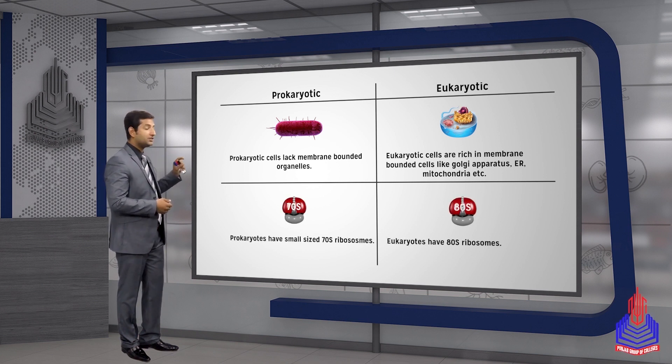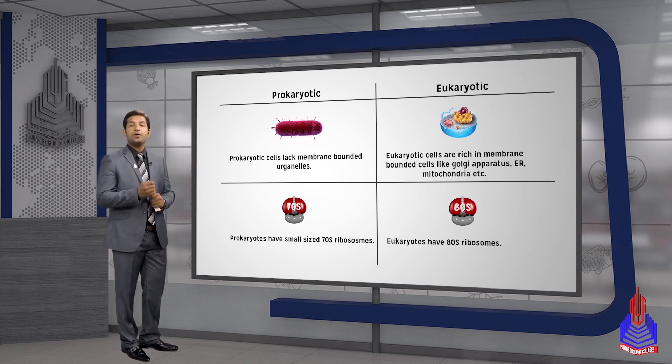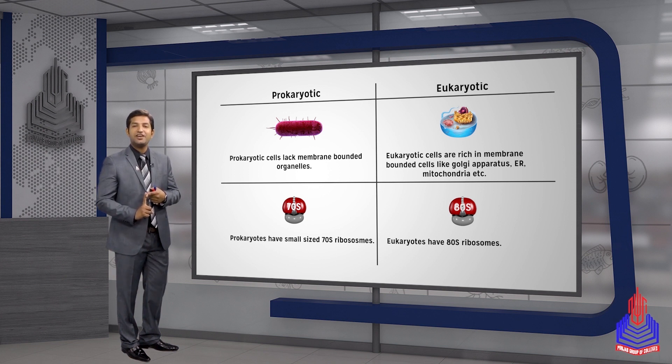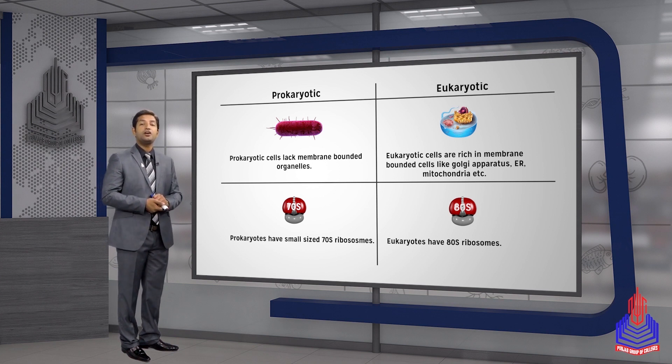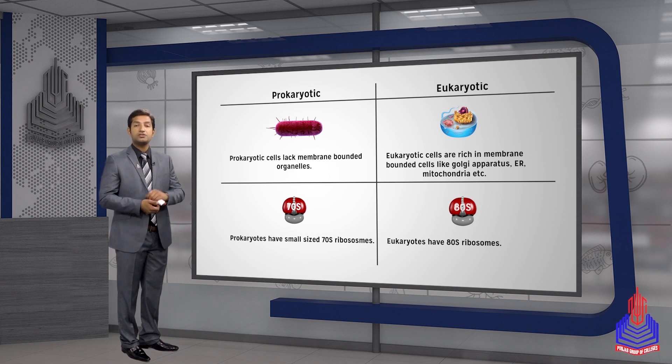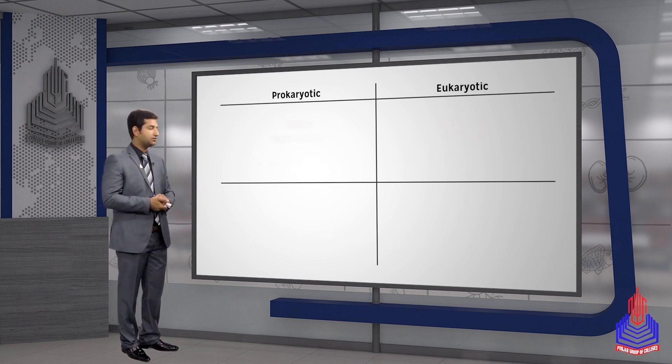Different types of ribosomes: prokaryotic ribosomes are 70S ribosomes - differentiated into subunits, they contain the smaller 30S subunit and larger 50S subunit. Eukaryotic ribosomes are 80S ribosomes with smaller 40S subunit and larger 60S subunit.